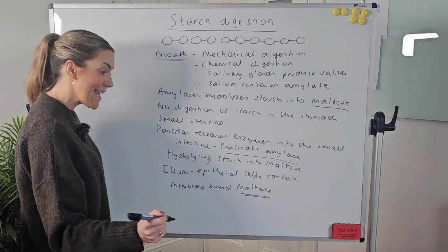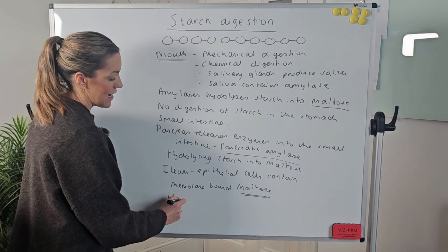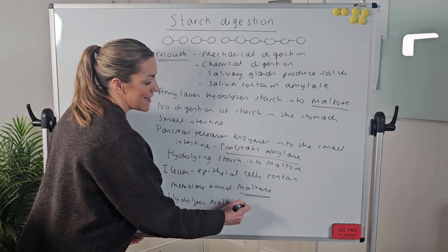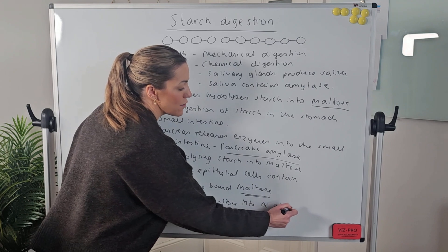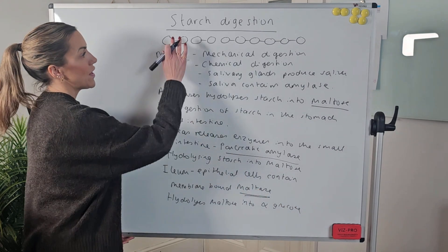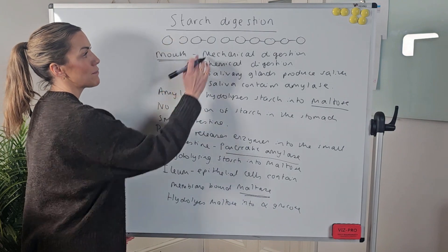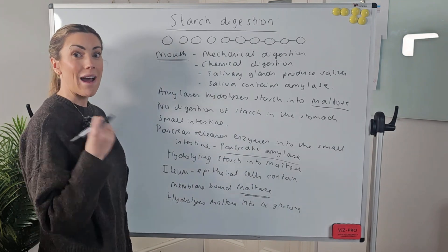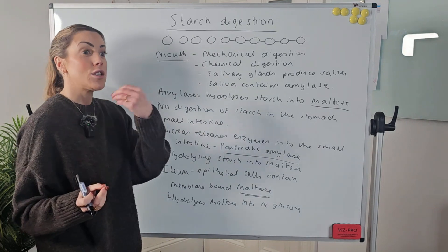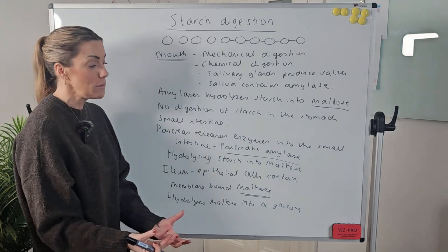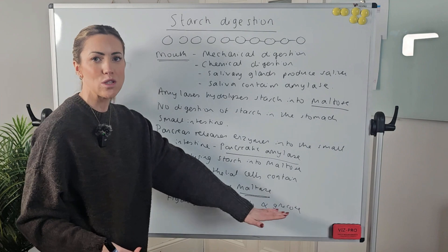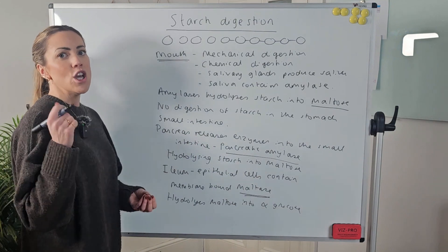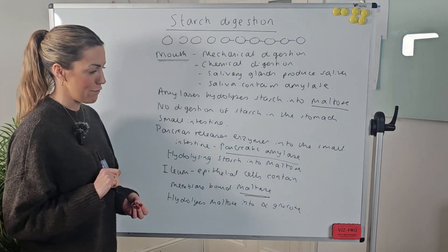And obviously, this enzyme maltase hydrolyzes maltose into alpha glucose. So if I show you one here, we'd hydrolyze this glycosidic bond, we'd hydrolyze this glycosidic bond, and we'd have the monomer or the monosaccharide alpha glucose, which is then small enough and it's soluble.